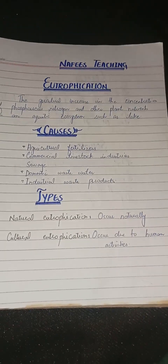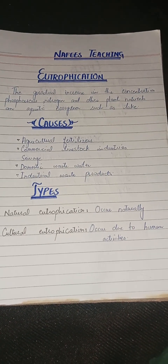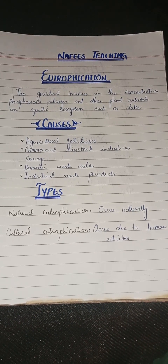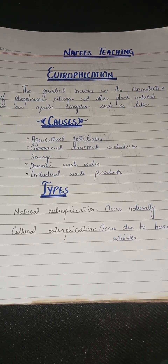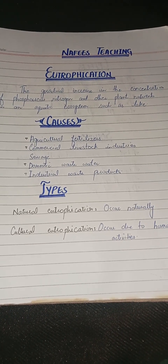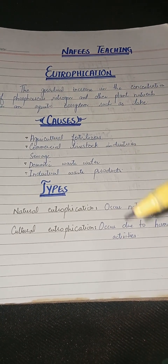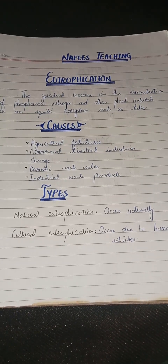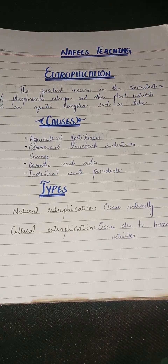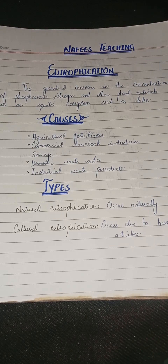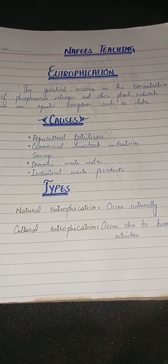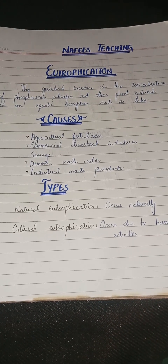This was our topic of eutrophication — the increase in phosphorus and nitrogen in aquatic ecosystems. We covered causes, types, effects, and solutions. If you liked my video, please like and share, and subscribe to my channel for upcoming videos. Thank you, Allah Hafiz.